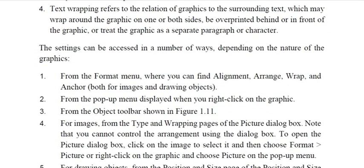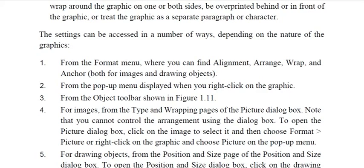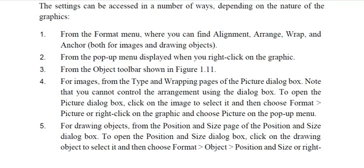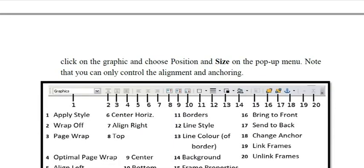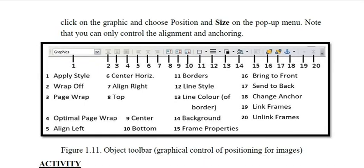These positioning settings can be accessed from the Format menu (alignment, arrangement, wrapping), the pop-up menu when you right-click on the graphic, or from the toolbar. In the object toolbar when you click a graphic, you can change anchoring, bring to front, bring to back, send to back, and other related properties.